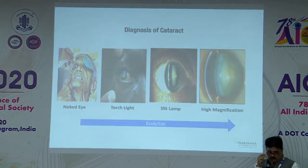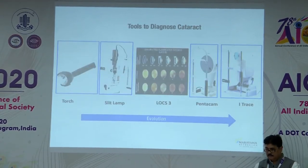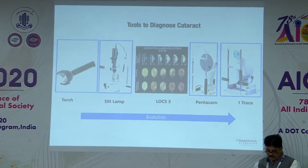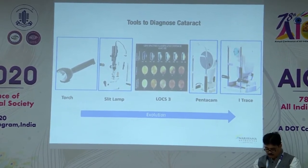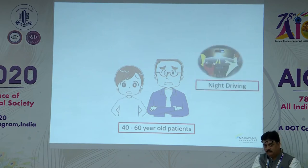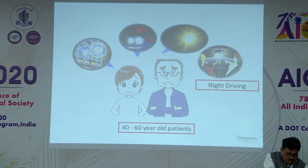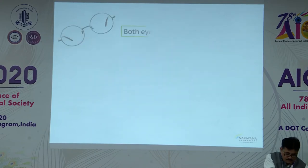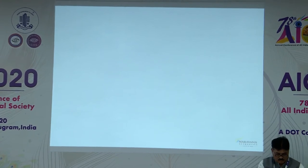The diagnosis of cataract has evolved over the years from naked eye to torchlight, slit lamp, and now high magnification. Similarly, tools to diagnose cataract have evolved from torch to slit lamp. For the longest time the gold standard was LOCS 3, and now objectively we have the Pentacam and the i-Trace. We often encounter patients between 40 to 60 years of age in our OPDs who are night drivers complaining of glare, halos, and starbursts. When we examine these patients, most have best corrected visual acuity of 6/6 and clear lenses.